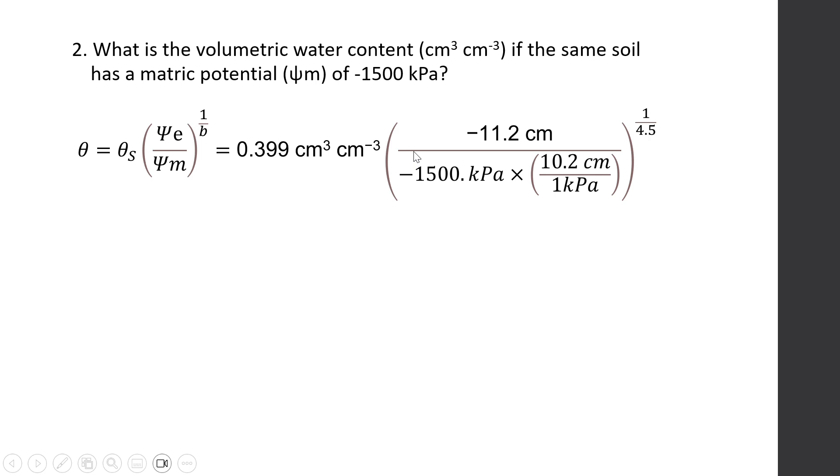Here, the procedure is just the same as the previous problem. We just need to replace the matric potential of the soil from minus 10 kPa to minus 1500 kPa and do the same process.